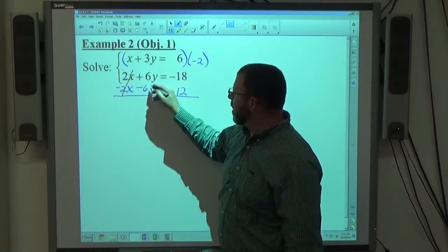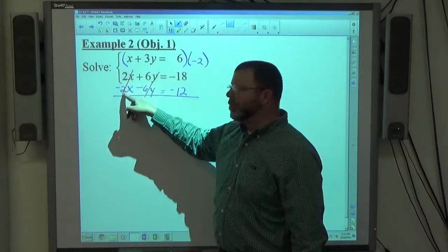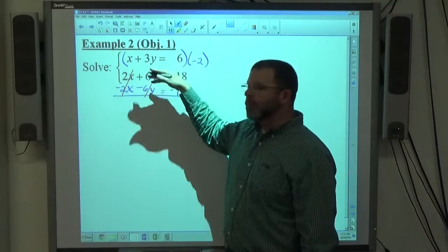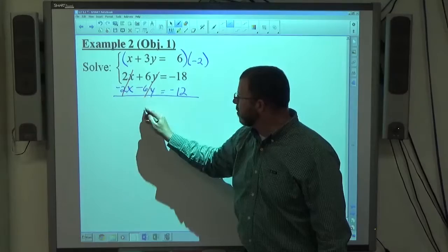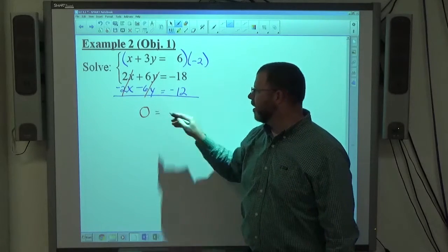But also, 6y minus 6y cancels. So this is what I wanted to happen. As a consequence of doing the problem correctly, this also cancels out. When that happens, everything on this side cancels out. We're left with nothing on the left-hand side.